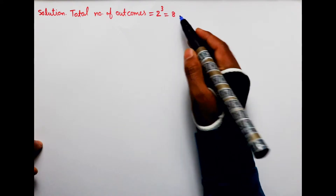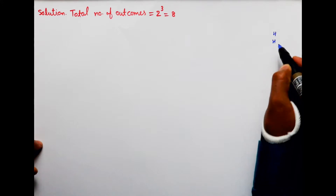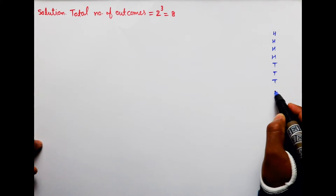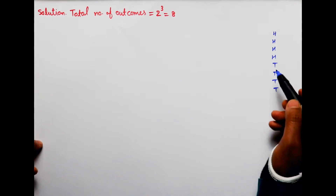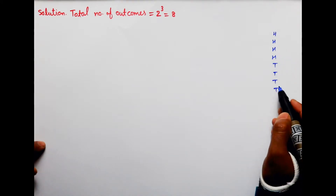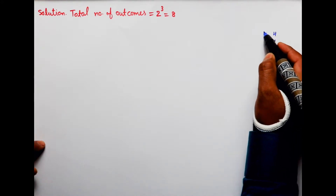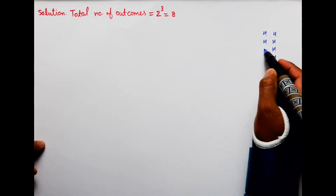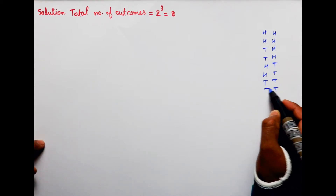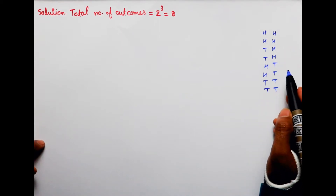Outcomes पता करने का तरीका: 8 का half कर लीजिए — 4 times head लिखना है और 4 times tail लिखना है। फिर 4 का half कर लीजिए — 2 times head, 2 times tail, 2 times head, 2 times tail। जब तक 8 ना आ जाए, ठीक है। फिर 2 का half कर लीजिए — one head, one tail, alternating, 8 times तक लिखना है।